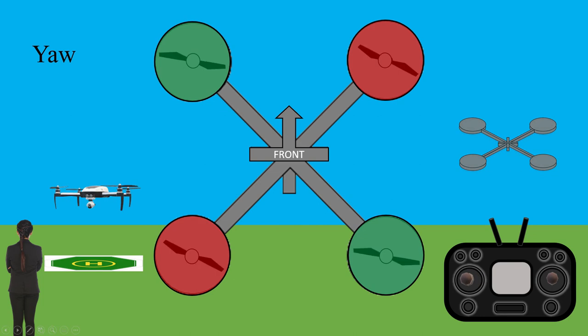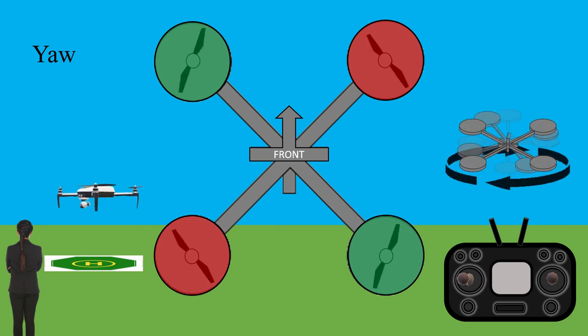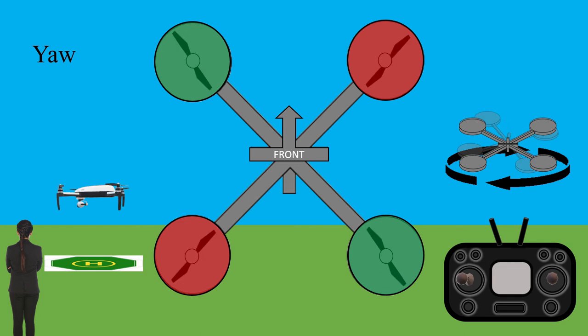Clockwise rotors have a positive angular momentum, and counterclockwise rotors have a negative angular momentum. To yaw to the right, the drone will speed up its clockwise spinning rotors and slow down its counterclockwise rotors.